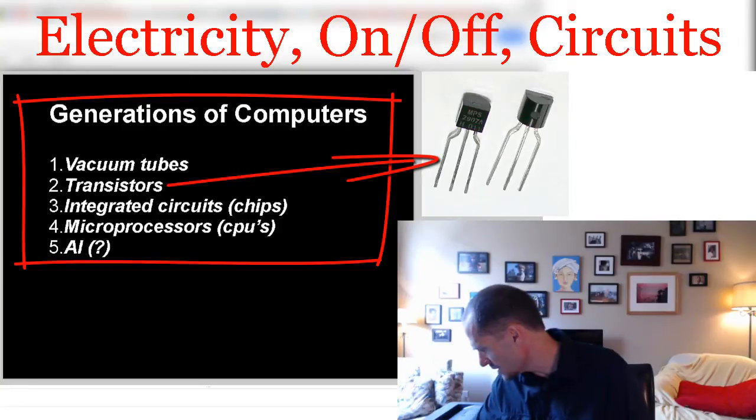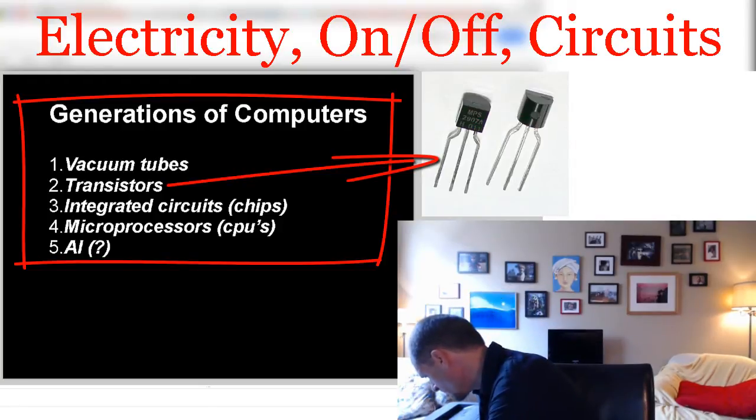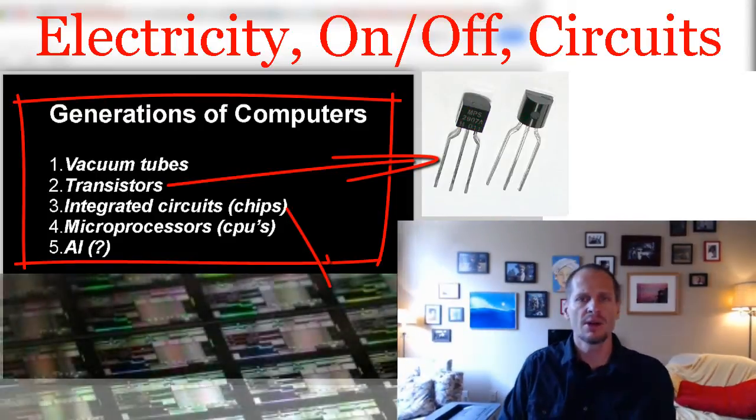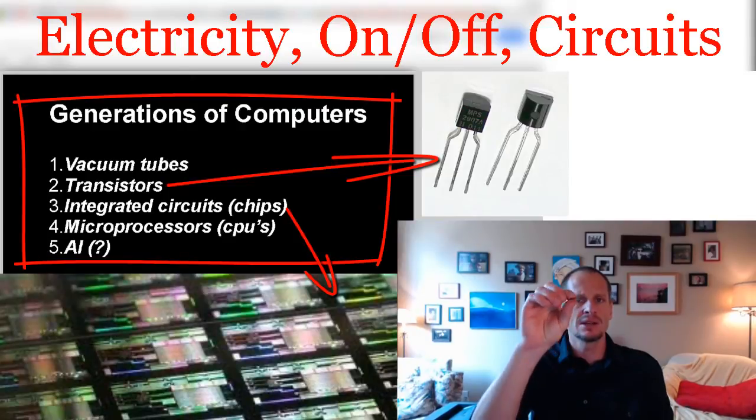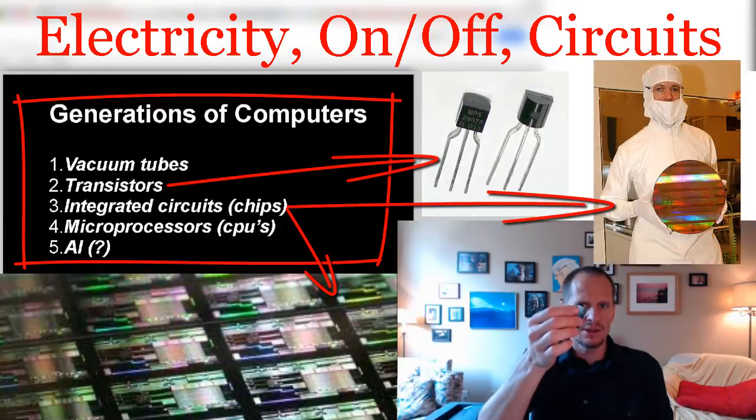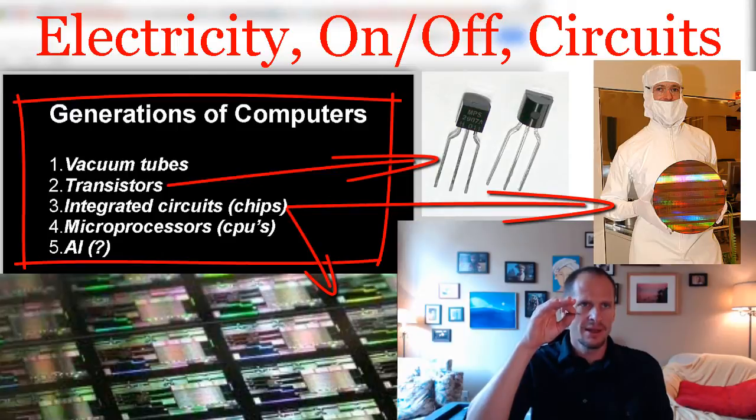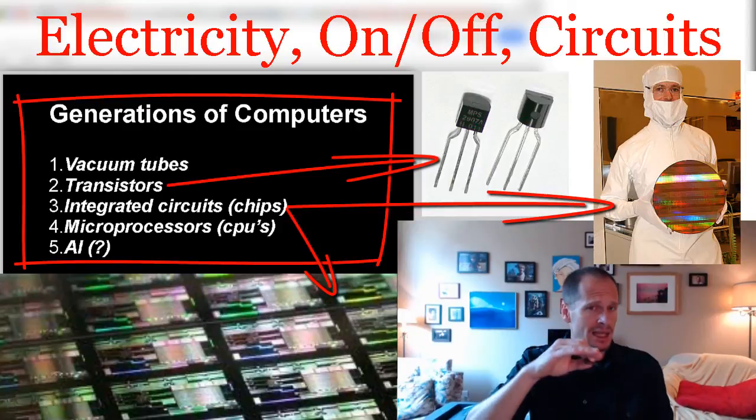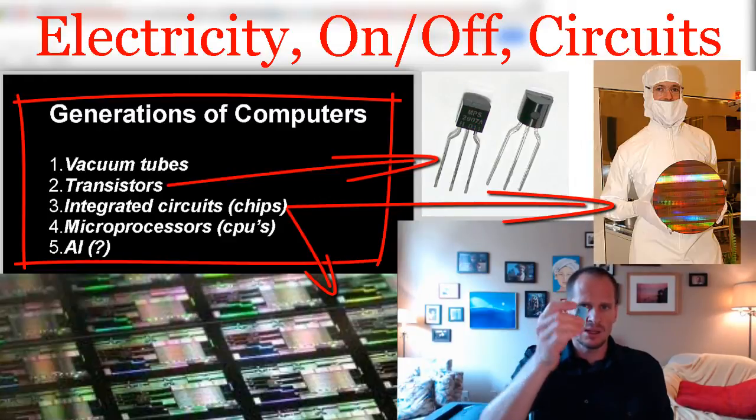The third generation of computers took a jump even farther and they started using integrated circuits or chips. Using silicon and creating silicon wafers - silicon is a semiconductor, so it's able to conduct electricity sometimes and not at other times, not all of the time and not none of the time, but sometimes and sometimes not.